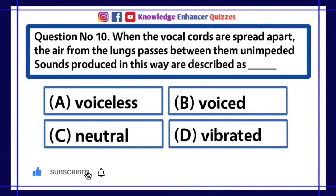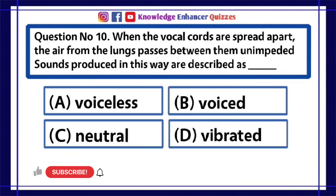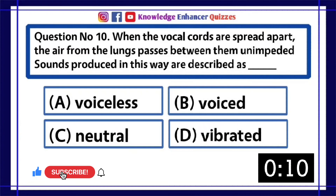Question number 10. When the vocal cords are spread apart, the air from the lungs passes between them unimpeded. Sounds produced in this way are described as dash. A. Voiceless. B. Voiced. C. Neutral. D. Vibrated.